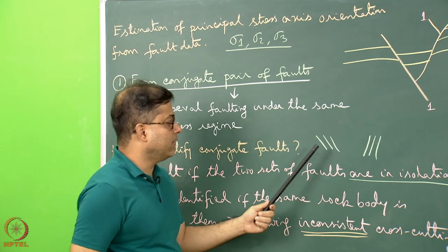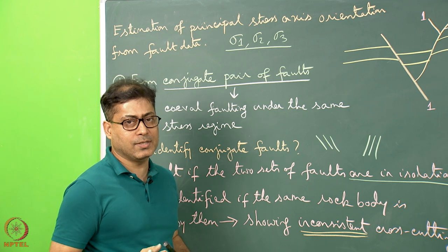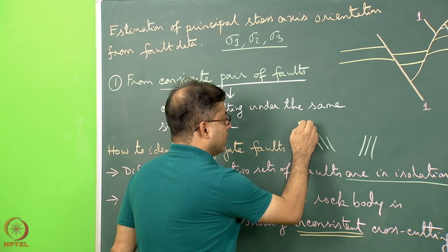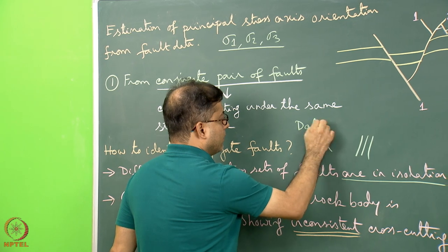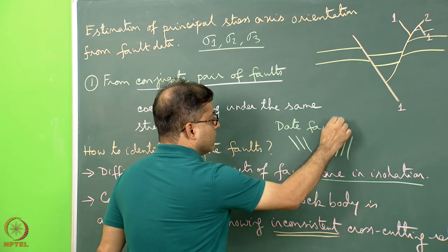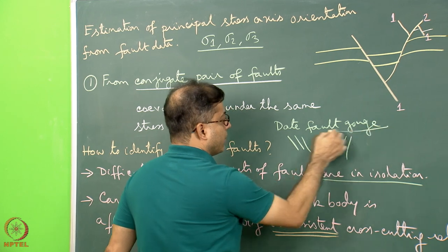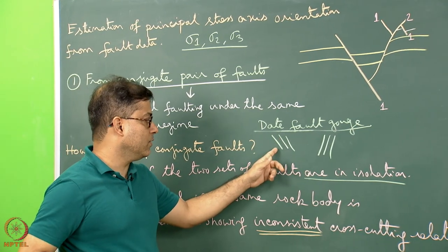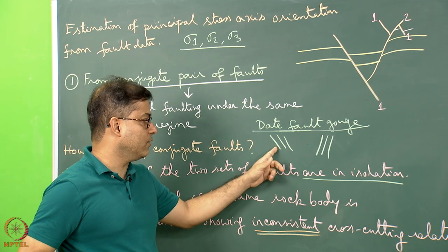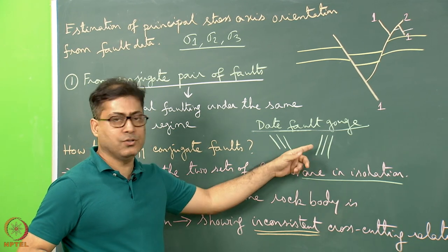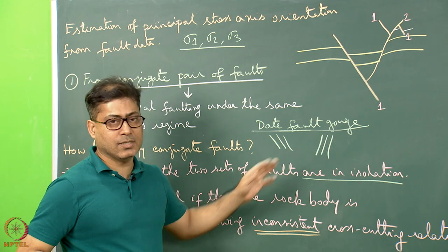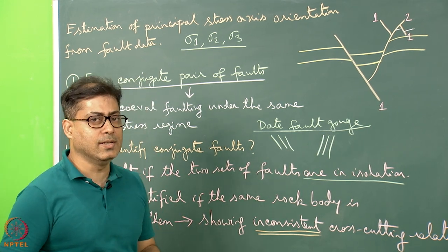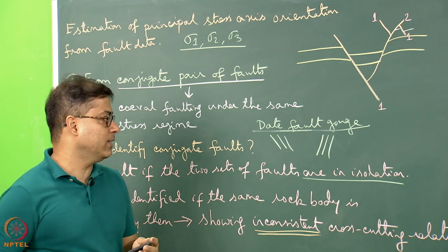How do we know that two faults far away from each other were simultaneous? One idea is to date the fault gouge. If the dates of the fault gouge related to the first set and those related to the second set have an overlapping time, that means the faulting was simultaneous or co-eval.